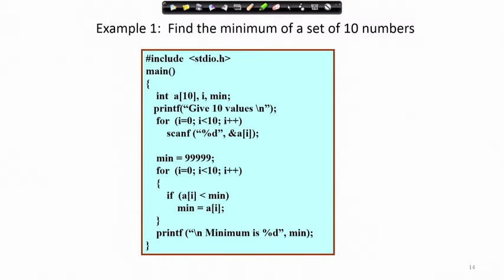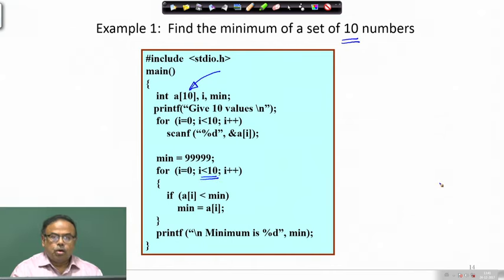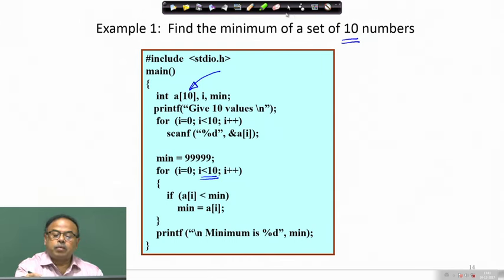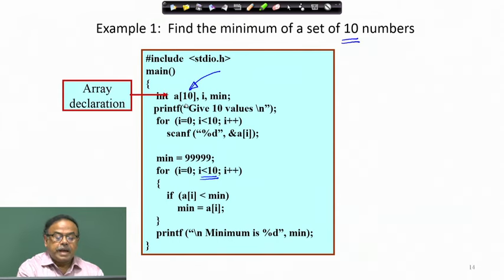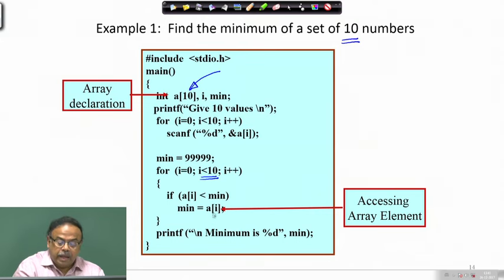We saw a program where we are finding the minimum of a set of 10 numbers. The program is restricted to 10 numbers, and accordingly I have declared the array A to be of size 10. The iteration limit has also been kept to 10. Here is the array declaration and this is where we are accessing the array elements — accessing element a[i] and assigning that to another variable min.